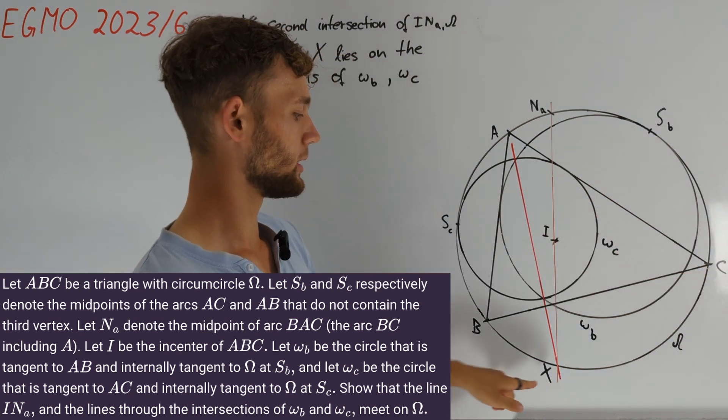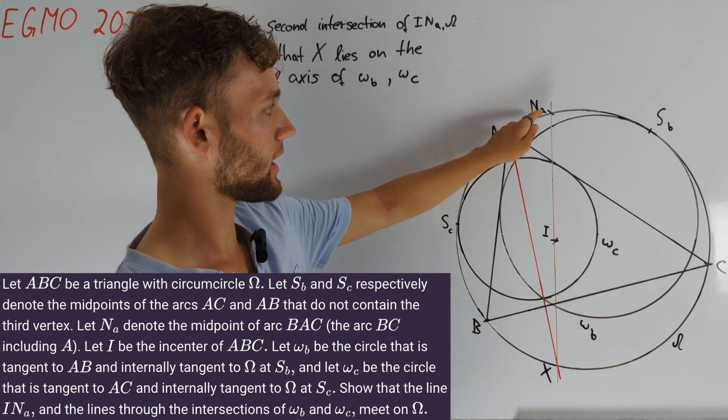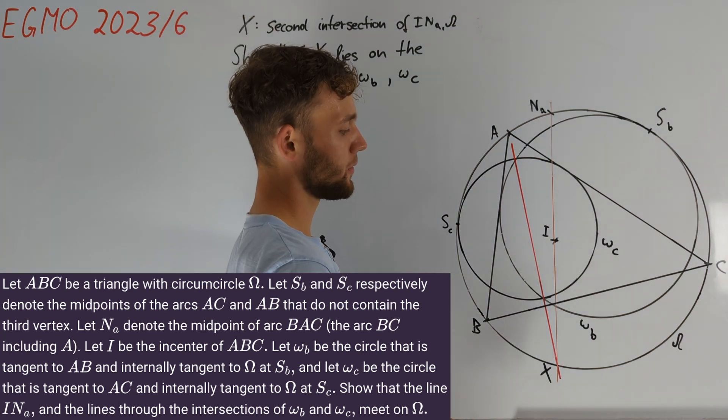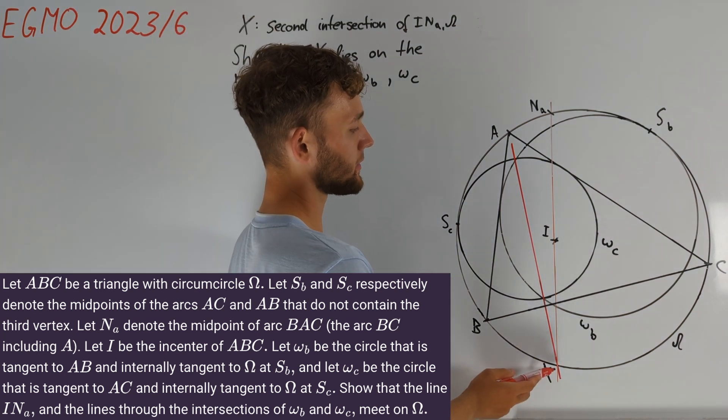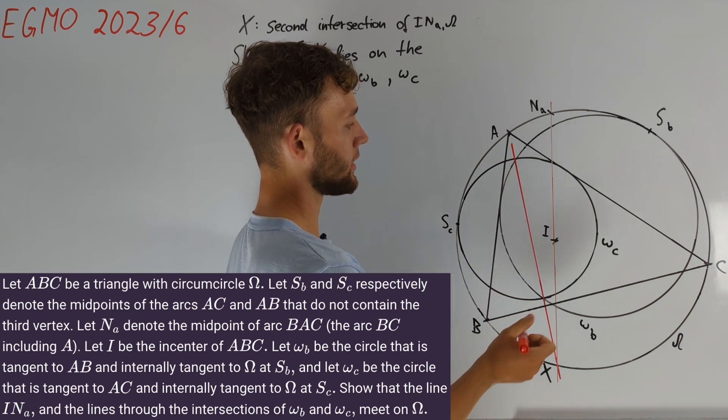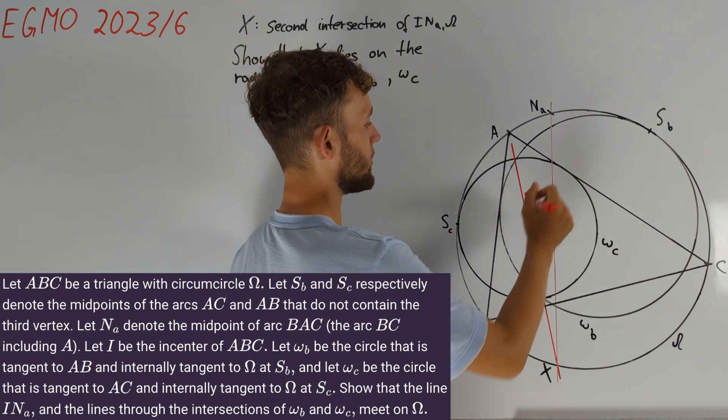Lastly, we will denote the second intersection of line NAI with omega by X. We are asked to prove that X lies on the radical axis of circles omega_B and omega_C, which is this red line G passing through their intersections.